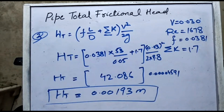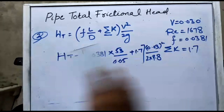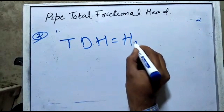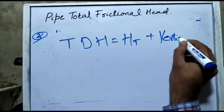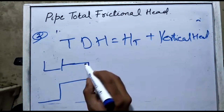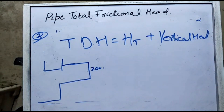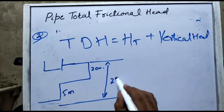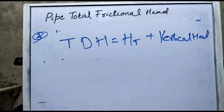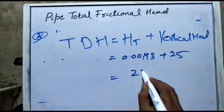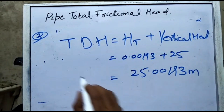The total frictional head from the Darcy-Weisbach equation is 0.00193 m. To find the total dynamic head, we add the frictional head to the vertical head. From the diagram, the vertical height was 20 m + 5 m = 25 m. Therefore, total dynamic head = 25 + 0.00193 ≈ 25.00193 m.